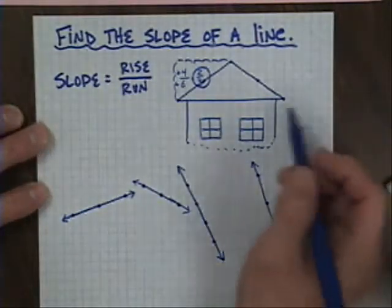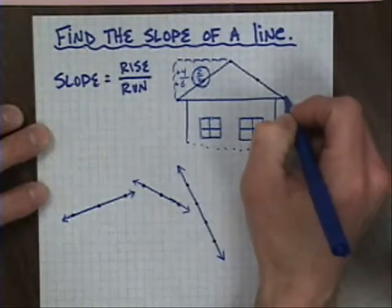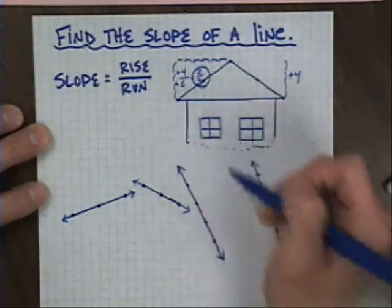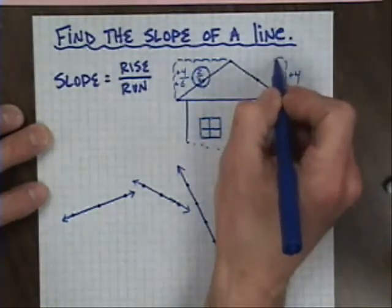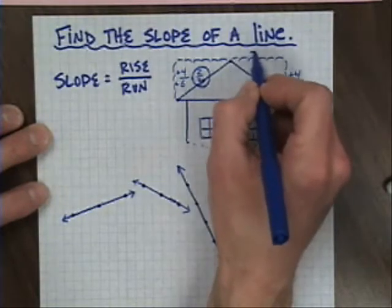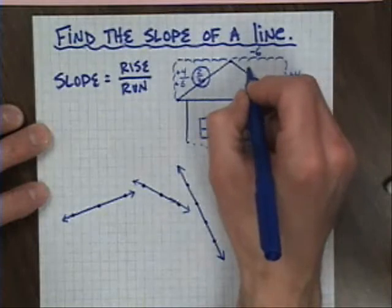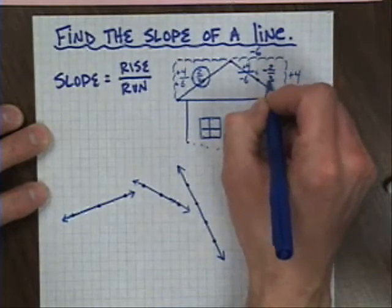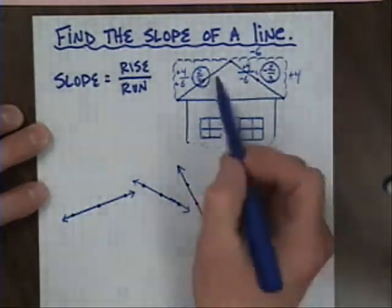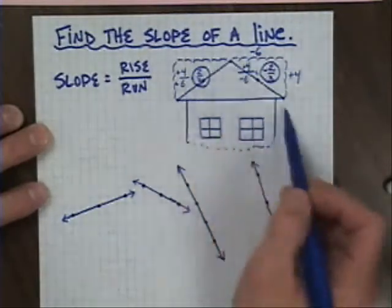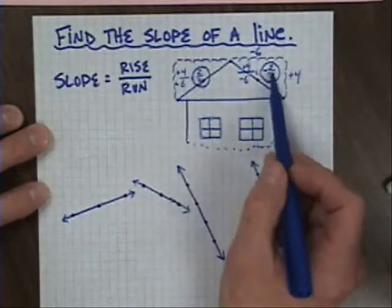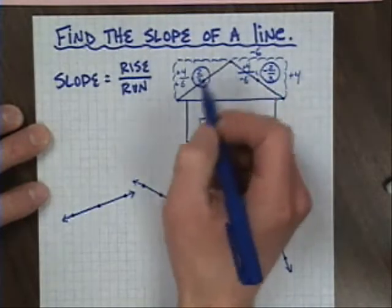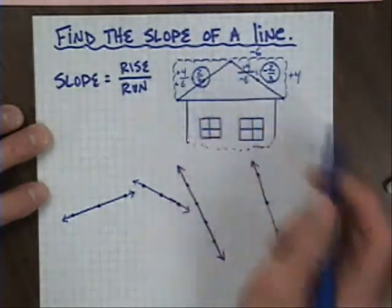To look at something slightly different, just look at the other side of the roof line. It's still up four, or plus four. But now I have to move left, and left on a number line is associated with negative — a negative six. So I'm going to have a positive four over a negative six, which simplifies to negative two-thirds. The slope angle doesn't really change; the fraction remains the same. It's the direction that controls the positive or negative. Remember: up and to the right is positive, up and to the left is negative.